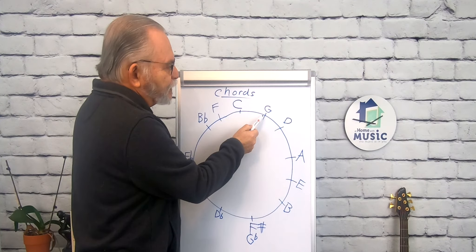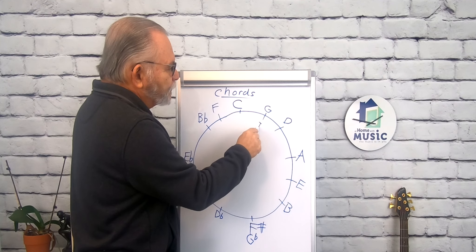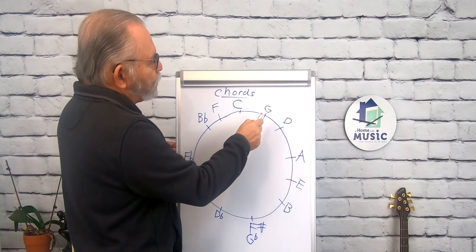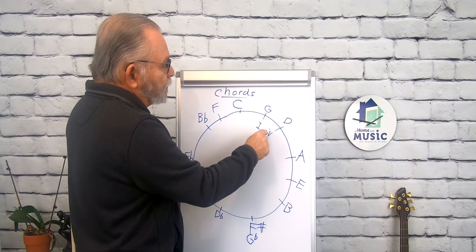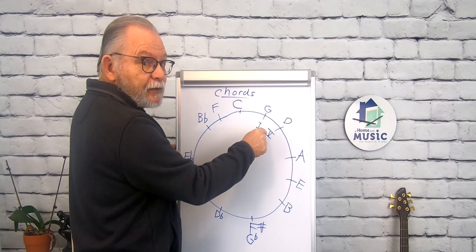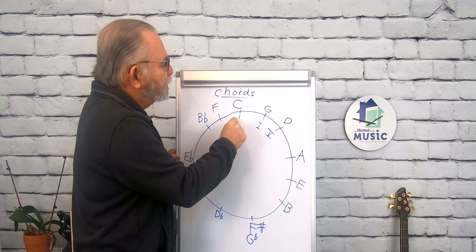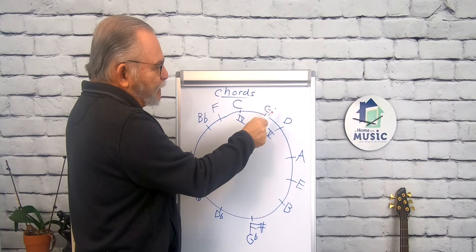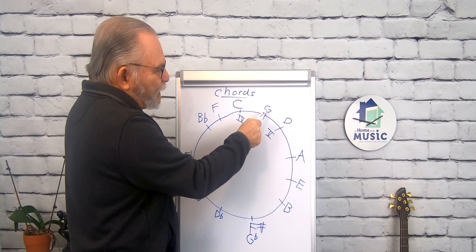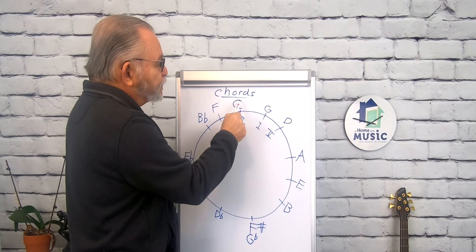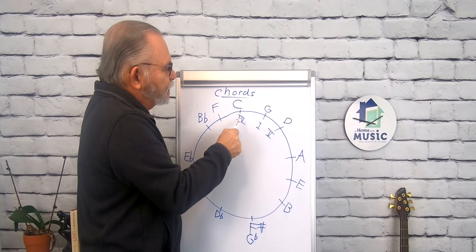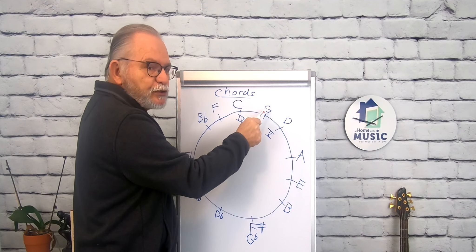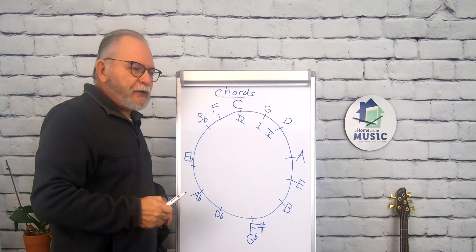Let's say we move over here to the key of G. Now G becomes the one. We have the G major scale, and so on. G becomes the one, and so D becomes the dominant, the five chord. And C becomes the four chord. So now if you're in the key of G and you play a D, the D feels like it should go back to the G. Or if you play C in the key of G, you can either go right back to the G, or you can go C, D, G.